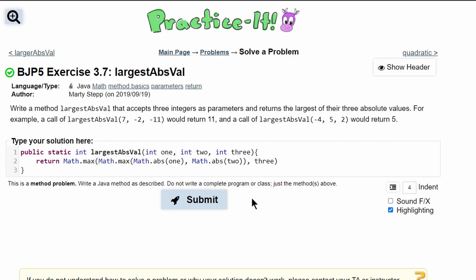But our three has to be in absolute values, so this is going to be Math.abs with three in here.